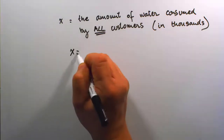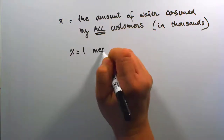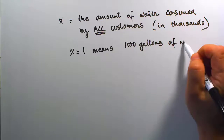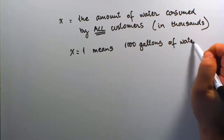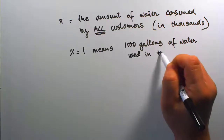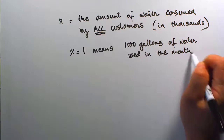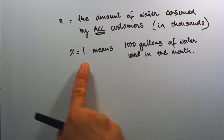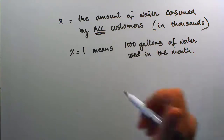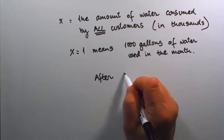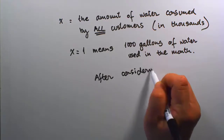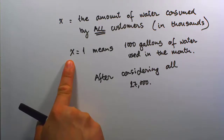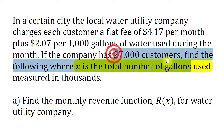So when X equals 1, it means 1,000 gallons of water being used in that month. The X variable, once assigned a value, represents the number of thousands of gallons used in a month across all 27,000 customers. The X variable is independent of the number of customers described in the problem.